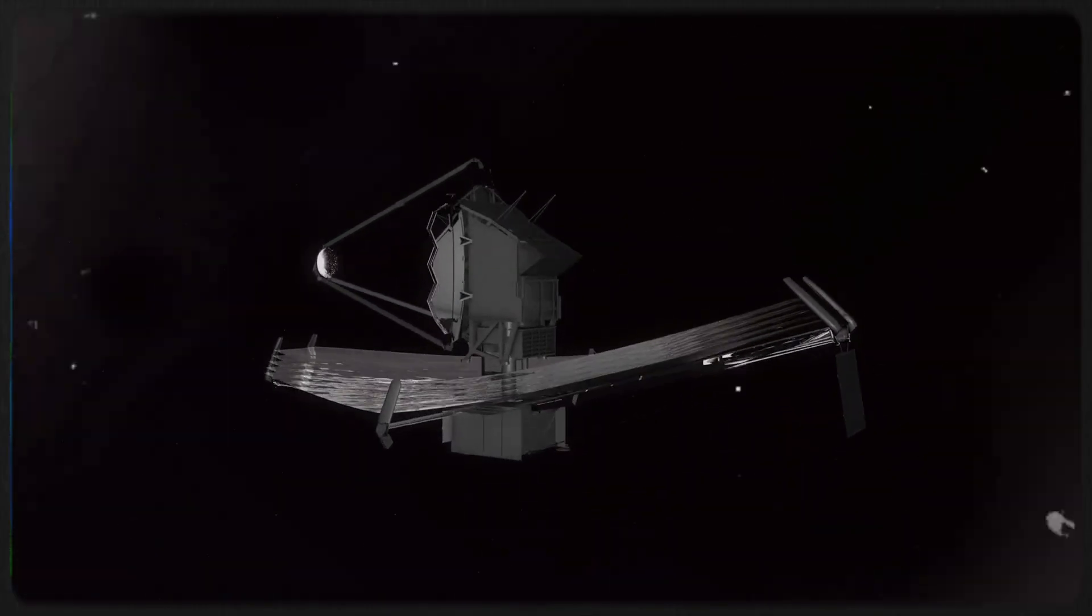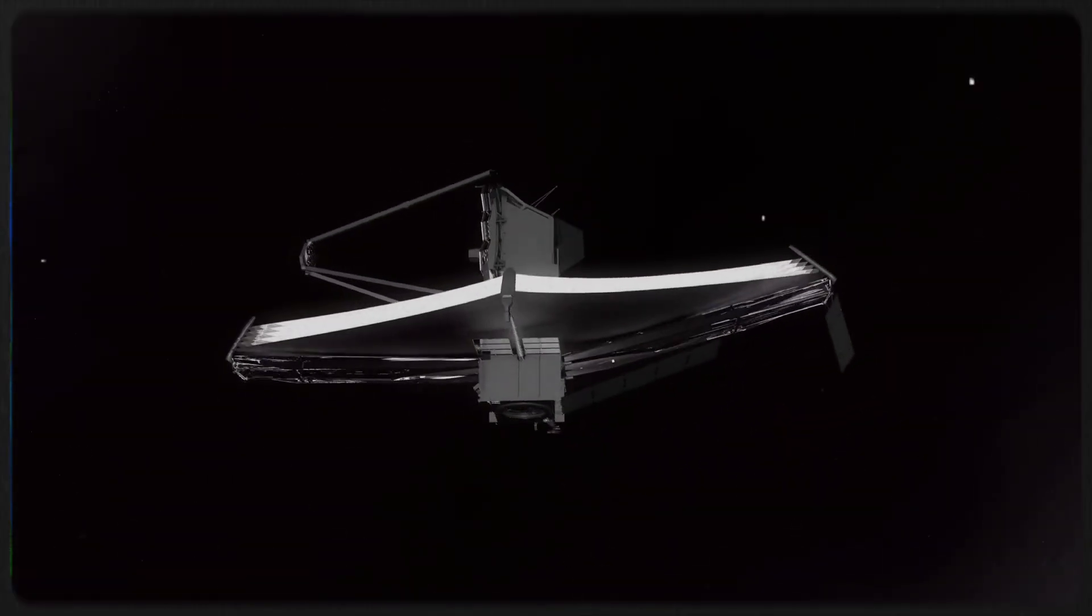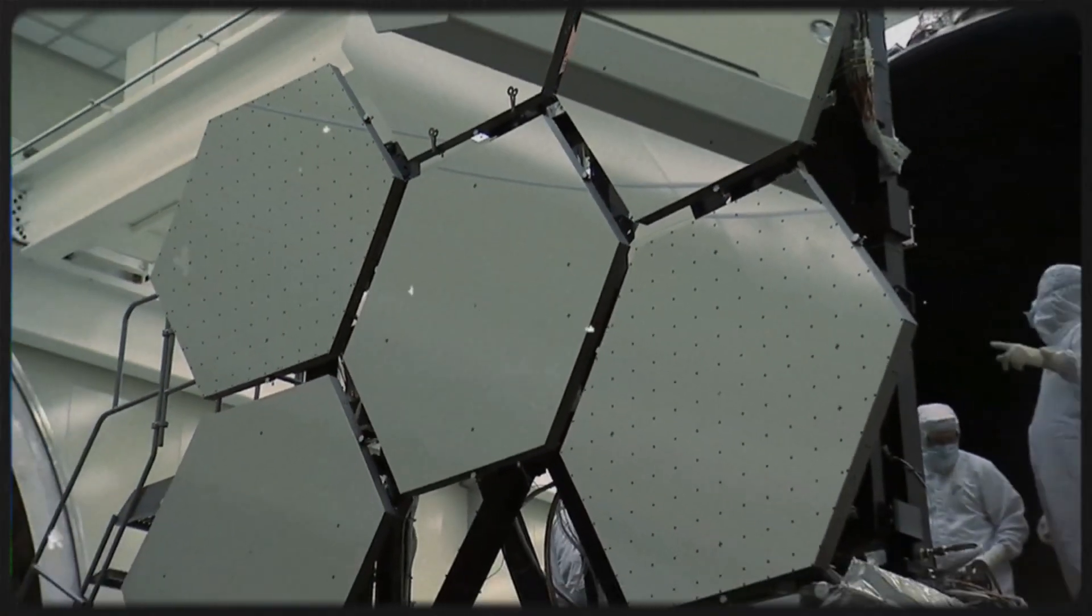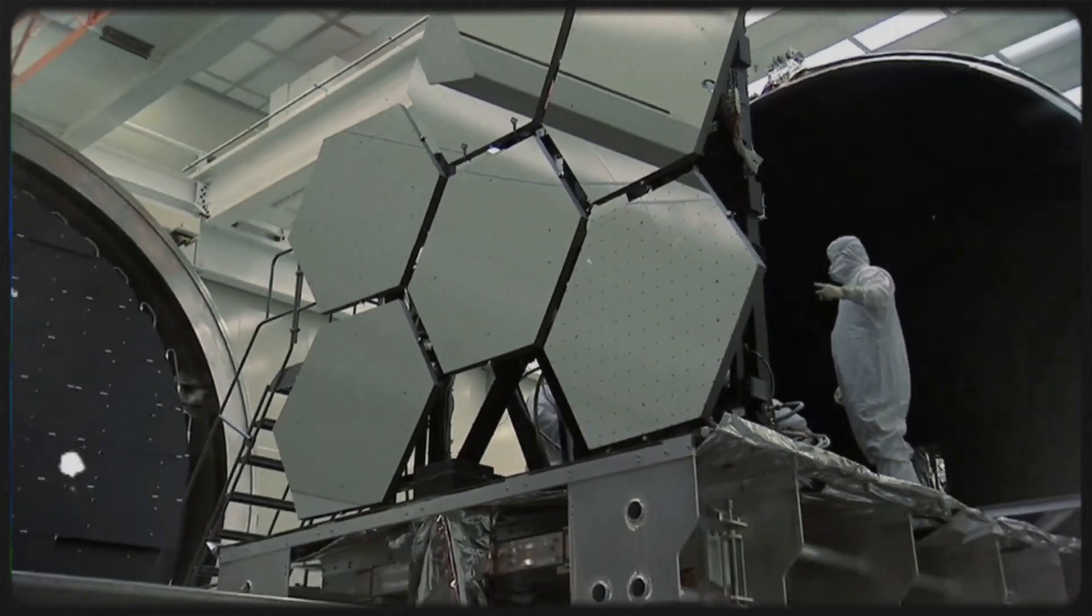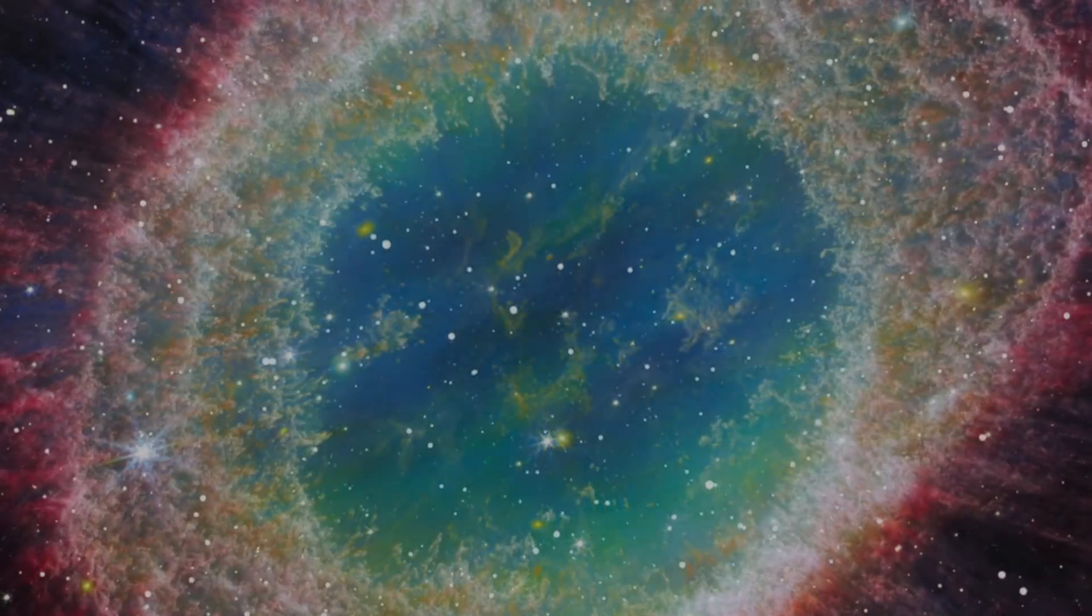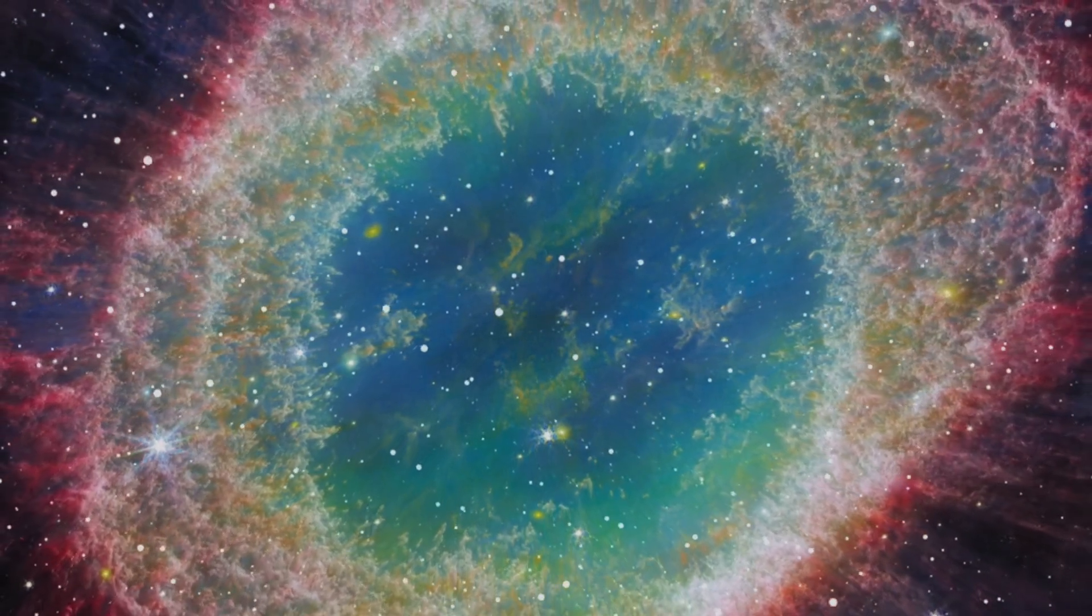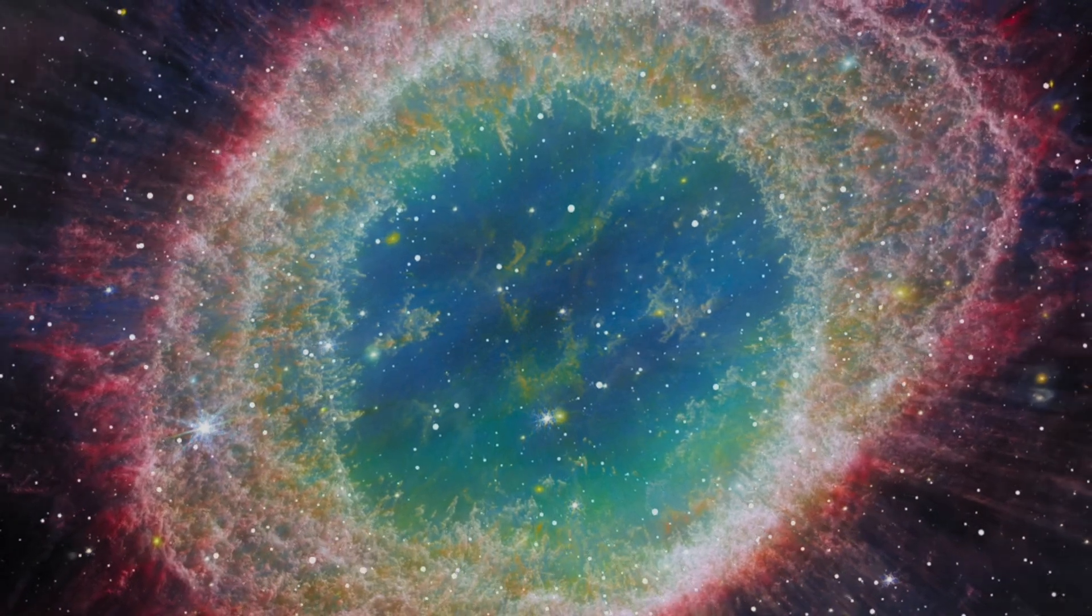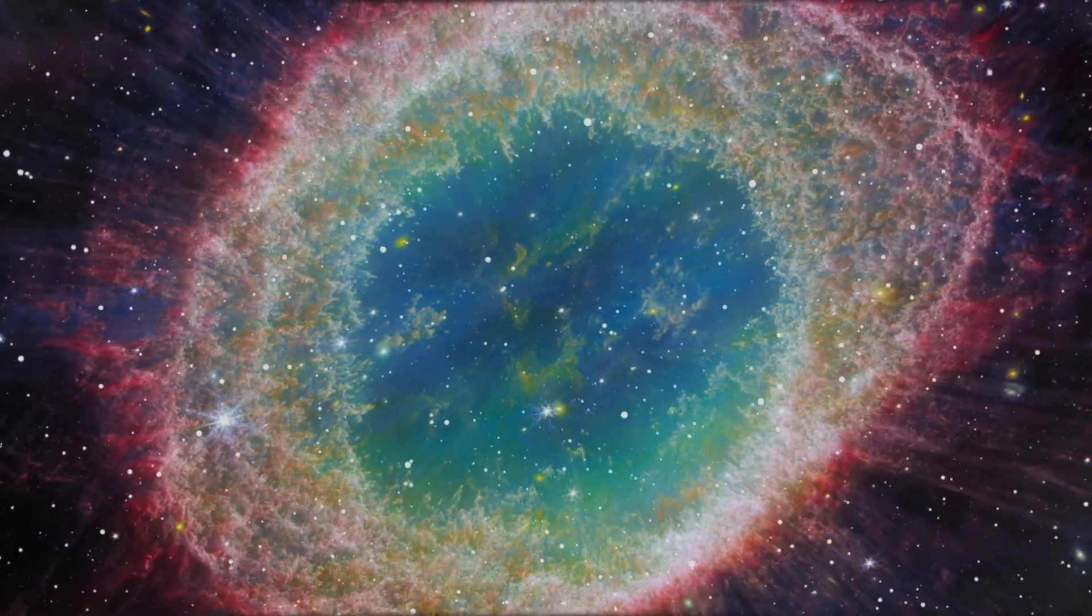But now, thanks to the James Webb Space Telescope, that comforting explanation is starting to crumble. Webb's ultra-precise observations are revealing deeper inconsistencies, and it's getting harder to blame them on simple mistakes. In fact, what we're seeing may point to something much bigger. The universe might not be behaving the way we thought. The cosmic rules we've trusted for decades could be incomplete or even wrong.